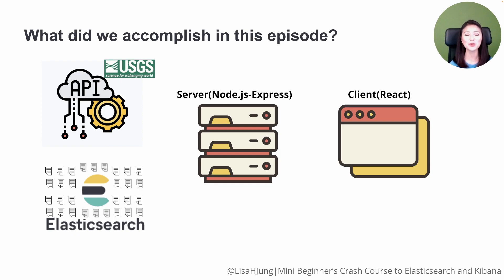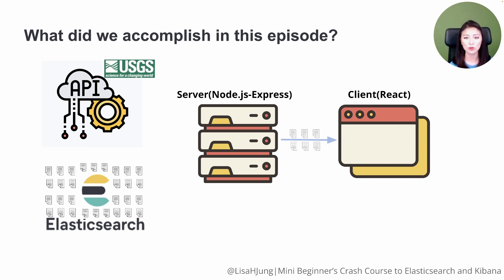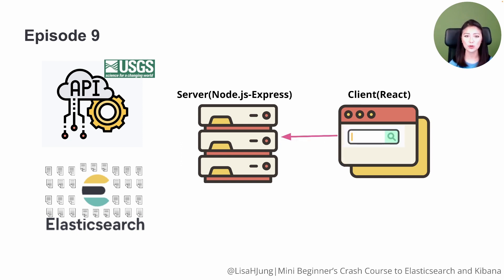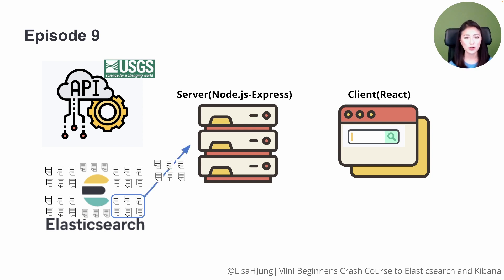In this episode, we've created a client that displays a list of search options for the user. We set up the client so that it captures the user input and sends it to the server. We also set up the client to receive search results from the server and display the results in the form of cards. In the next episode, we'll set up our server to pass the user input received from the client into an Elasticsearch request and send it to Elasticsearch. Elasticsearch will then retrieve the relevant documents and send the documents to the server, which will then send them to the client so the results could be displayed to the user.